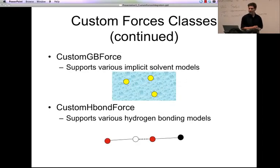We also have some more complicated ones. There's one called custom GB force. It's actually a very complicated class, but it can support a wide range of implicit solvent models. It is complicated because implicit solvent models are very complicated. But it takes maybe a dozen lines to implement most implicit solvent forces with this class. And if you were just doing it directly, it would maybe be a thousand lines of CUDA code to do the same thing. And then we also have one called custom H-bond force that can support a wide range of hydrogen bonding models.